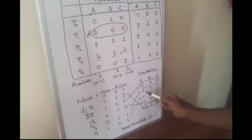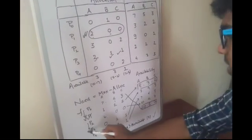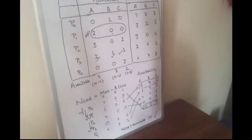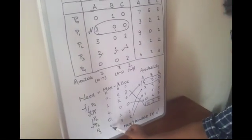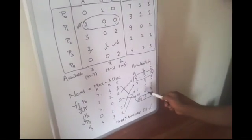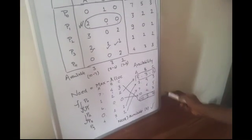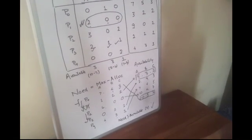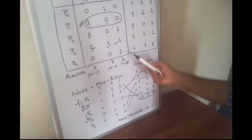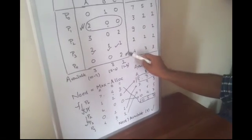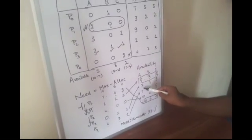Now we move to P4. Similarly, its need is 4, 3, 1 while availability is 7, 4, 5, which is accepted. So it gets executed and releases its resources. 7, 4, 3 plus 0, 0, 2 is 7, 4, 5. P4 gets executed.